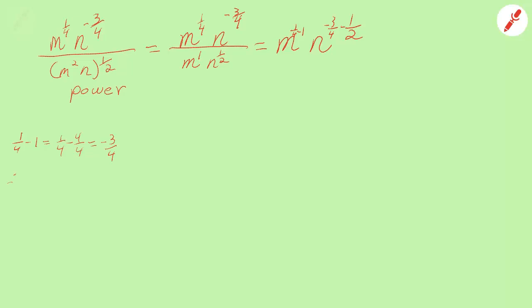Negative three-fourths minus one-half, the other power is going to be negative three-fourths minus two-fourths, which will be negative five-fourths.